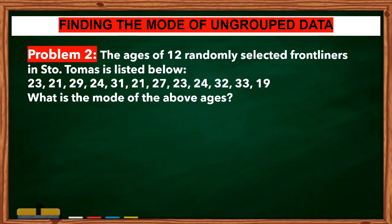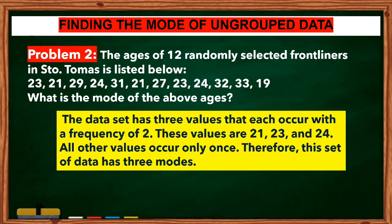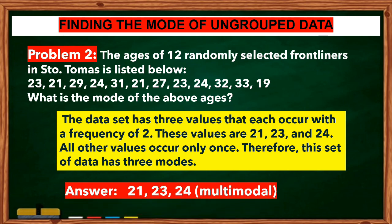Next example: The ages of 12 randomly selected frontliners in Santo Tomas are listed below: 23, 21, 29, 24, 31, 21, 27, 23, 24, 32, 33, and 19. What is the mode of the above ages? The dataset has three values that each occur with a frequency of 2. These values are 21, 23, and 24. All other values occur only once. Therefore, this set of data has three modes. The answers are 21, 23, and 24, and they are called multimodal.